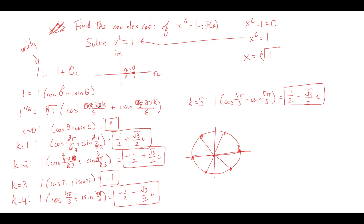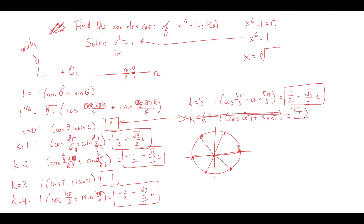You can do the same process on any complex number — just find its angle, use that as your initial angle, and add 2πk to continue. Remember: if it's the 6th root, you should get six answers; if it's the 5th root, you get five answers. The point is really drilling home the fundamental theorem of algebra, which says you should get as many complex solutions as the degree of the polynomial.